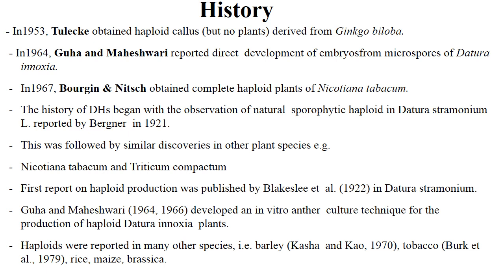Haploid plants were reported in many plant species like barley by Kasha and Kao in 1970, tobacco by Burke and co-workers in 1979, rice, maize, Brassica, etc.